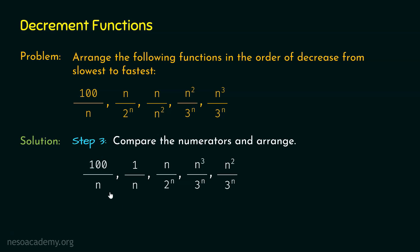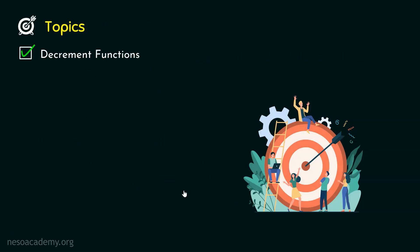This ordering is correct: 100/N has the slowest decrease and N²/3ⁿ has the fastest decrease. This ordering goes from the slowest decrement function to the fastest decrement function. We learned how to arrange decrement functions in order of decrease from slowest to fastest, and I hope the concept of decrement functions is now clear. With this, we are done with this lecture.